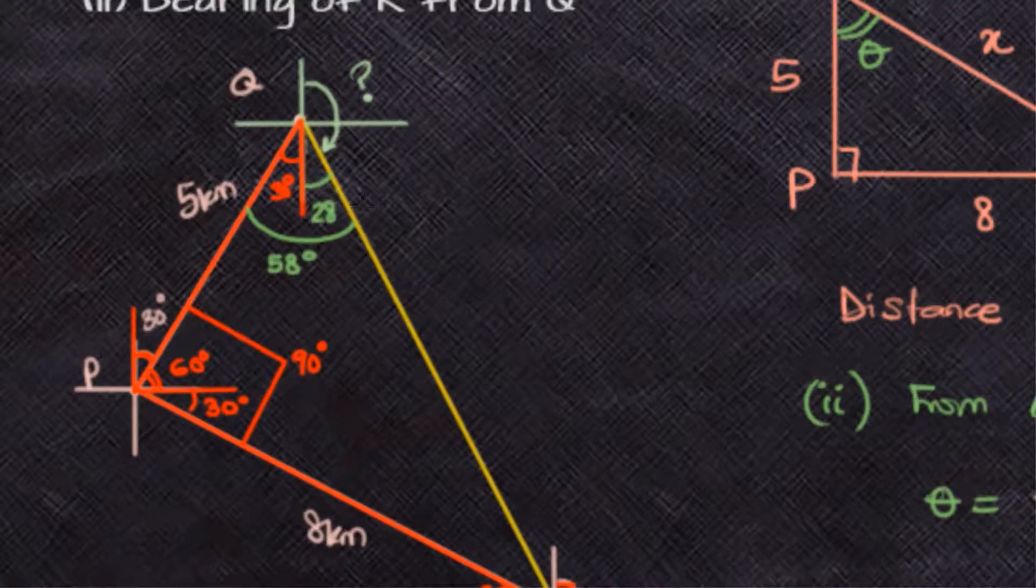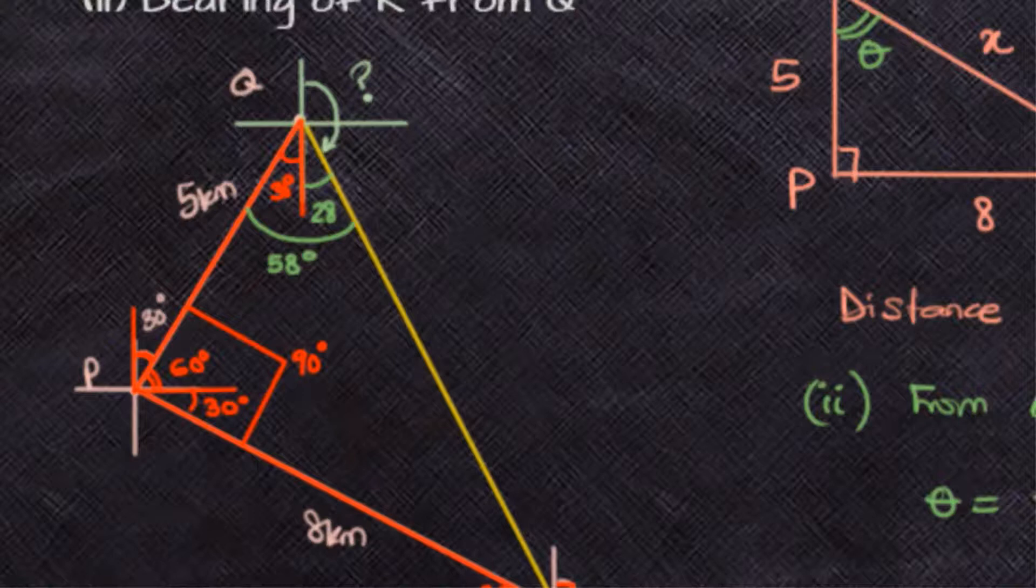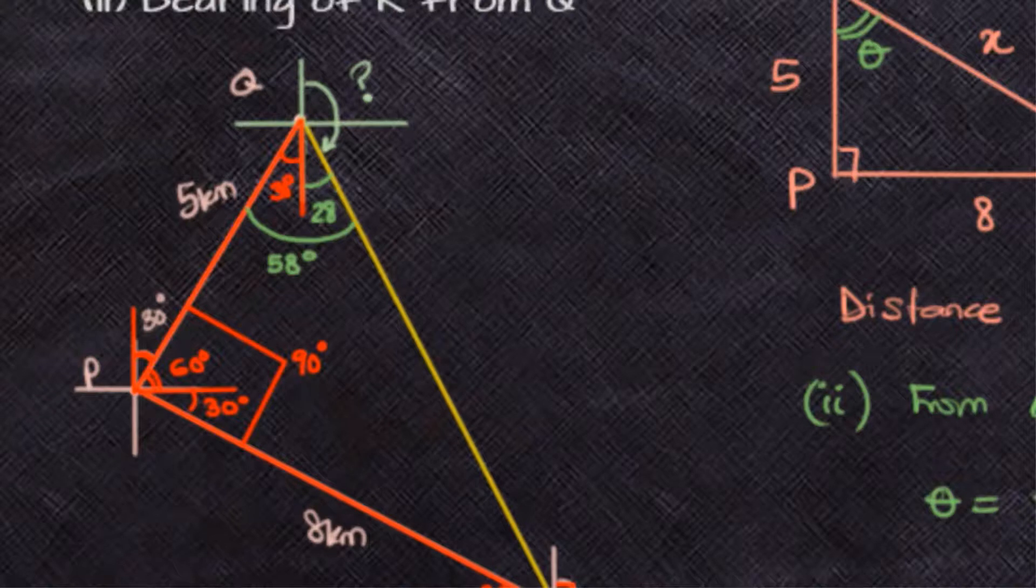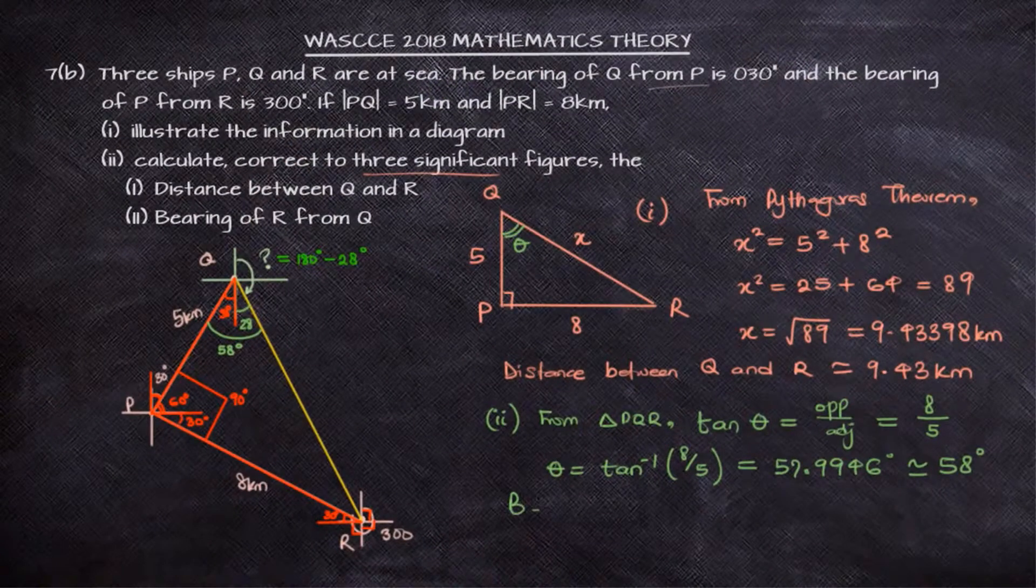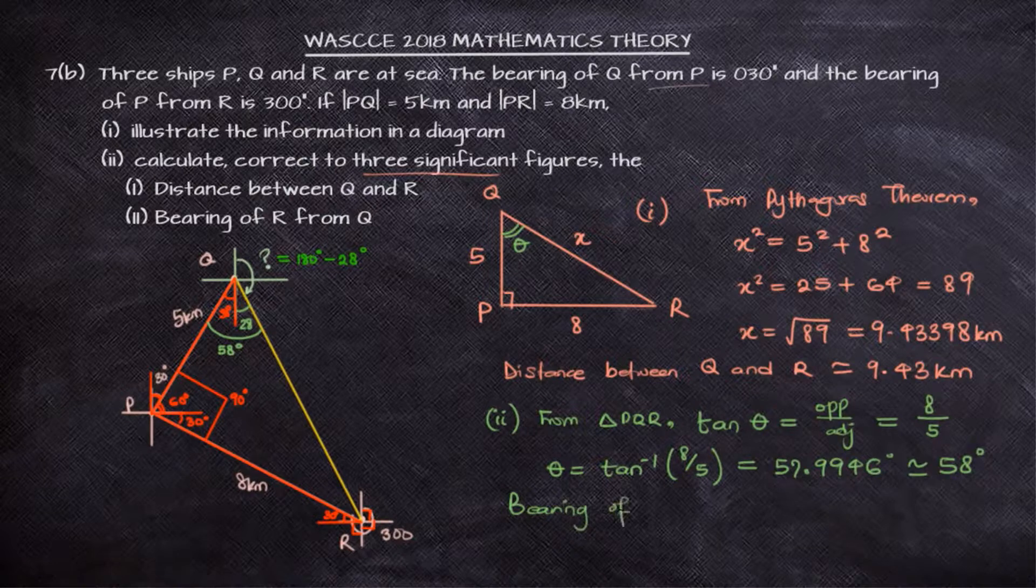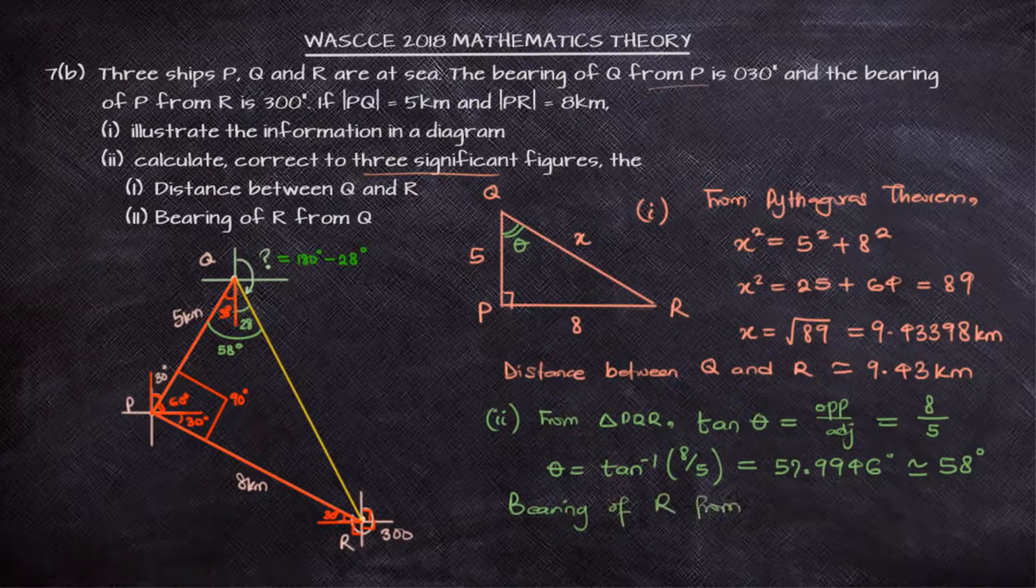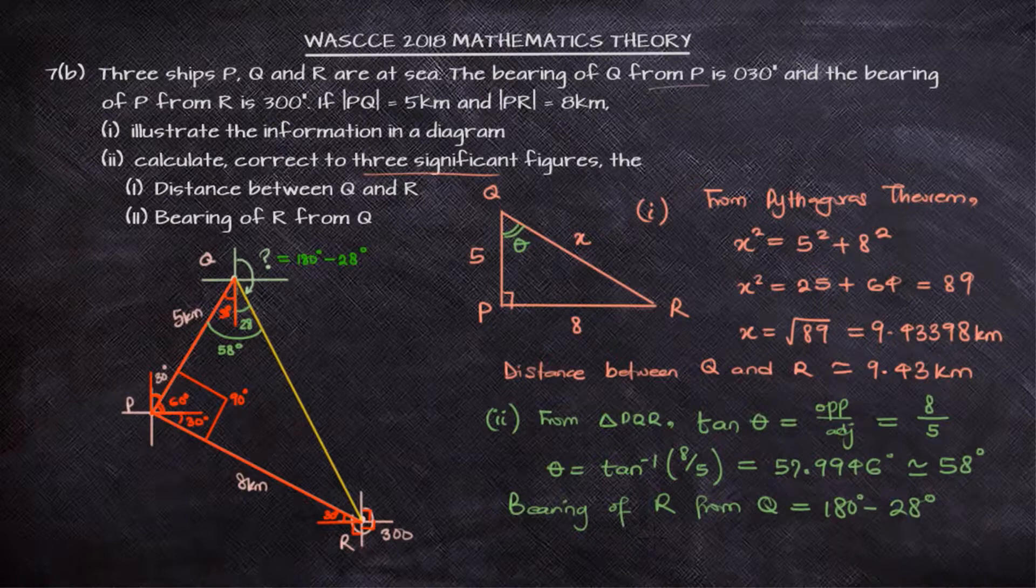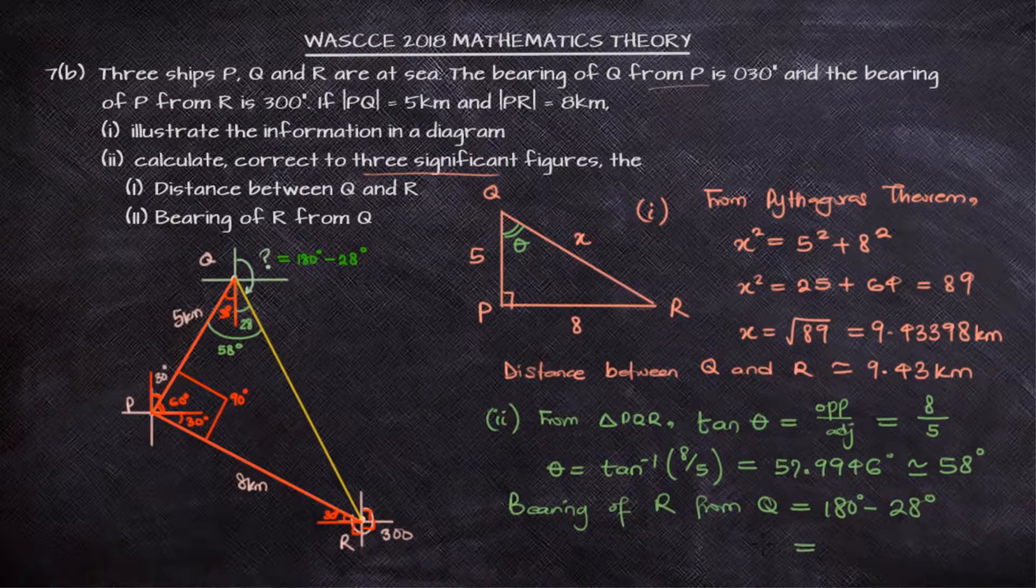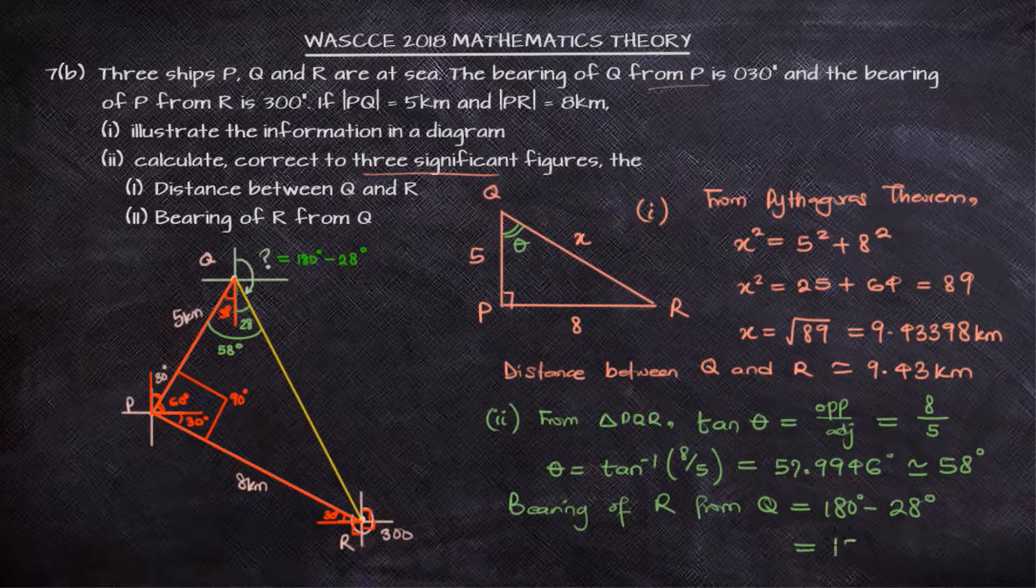If you notice the straight line coming from the top down to the base at point Q, the angle on the straight line is 180 degrees. So the angle in question, the bearing we are looking for, will be equal to 180 minus 28. We can conclude that the bearing of R from Q will be 180 degrees minus 28 degrees, which equals 152 degrees. That is the bearing of ship R from ship Q.